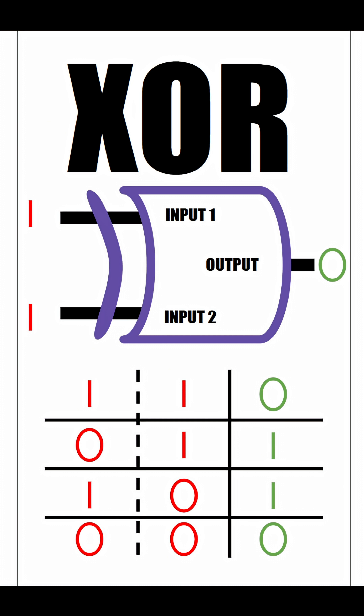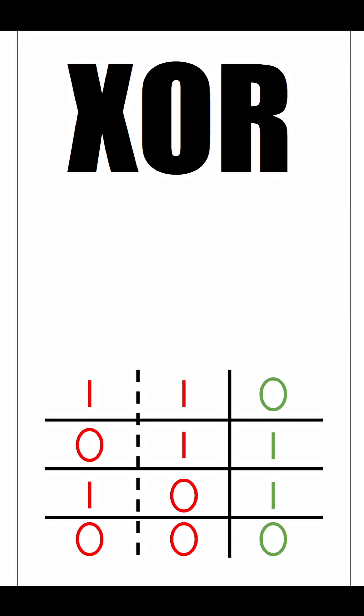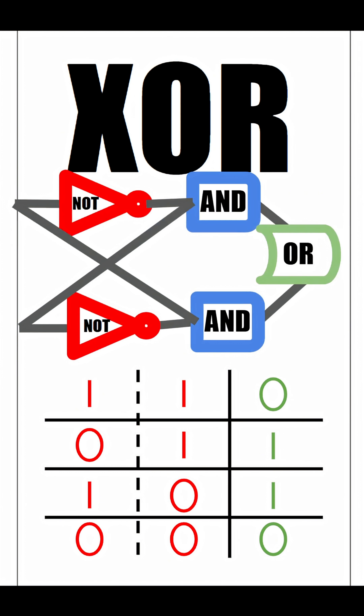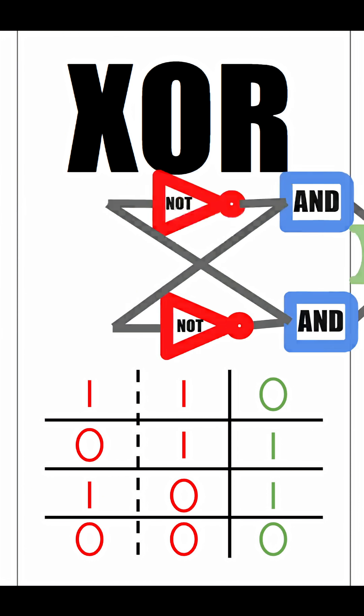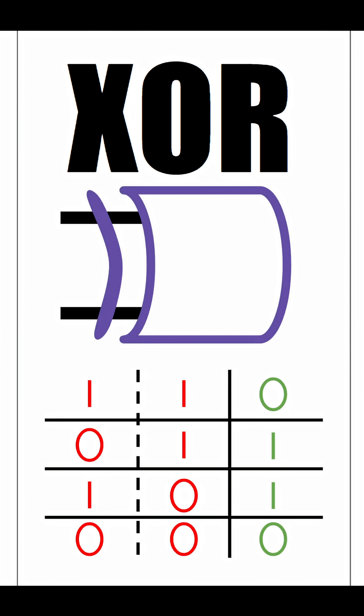The interesting thing about an XOR gate is that we can write it using multiple logic gates — this is how the XOR gate is constructed. An input goes into a NOT gate and an AND gate, and another input goes into a different NOT and AND gate, which hook up to an OR gate. That's the XOR gate. Thanks for watching.